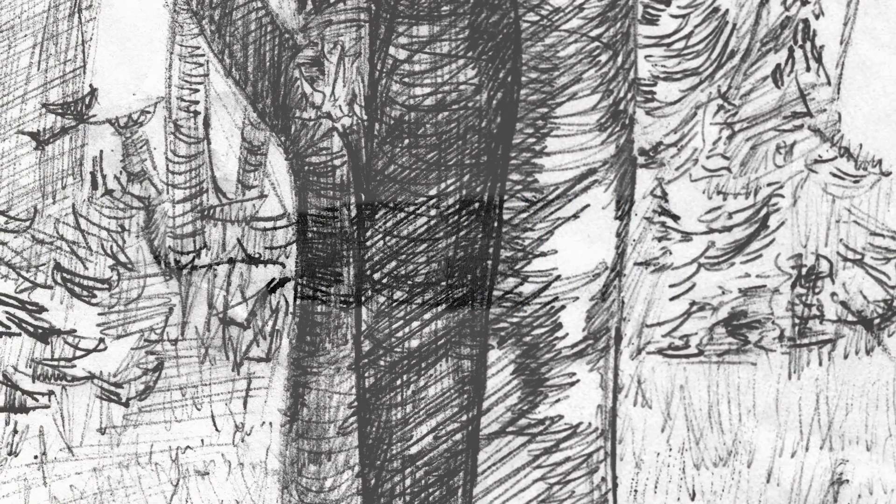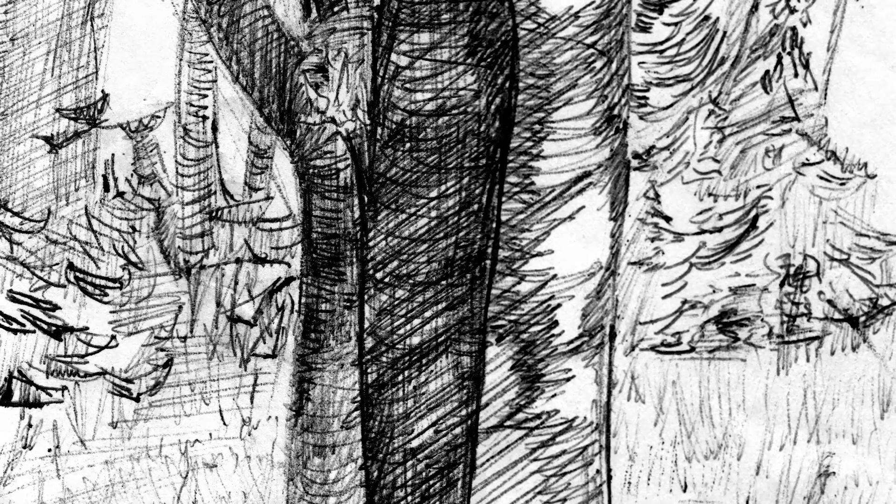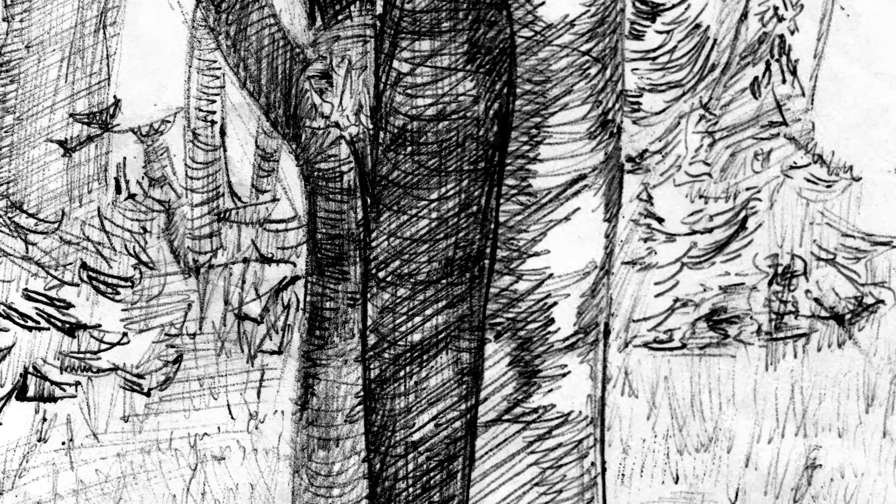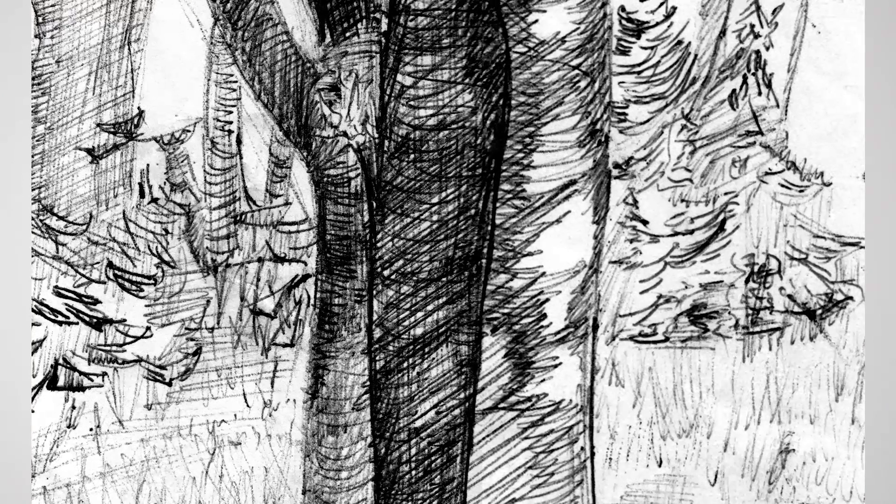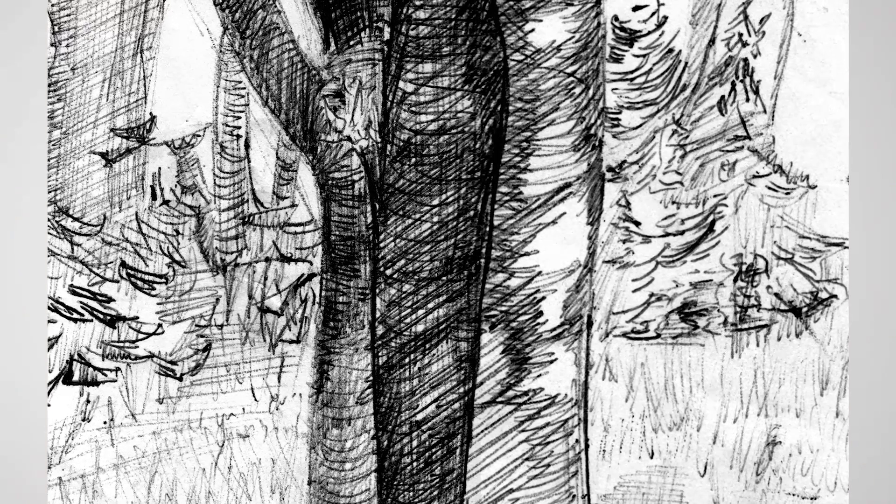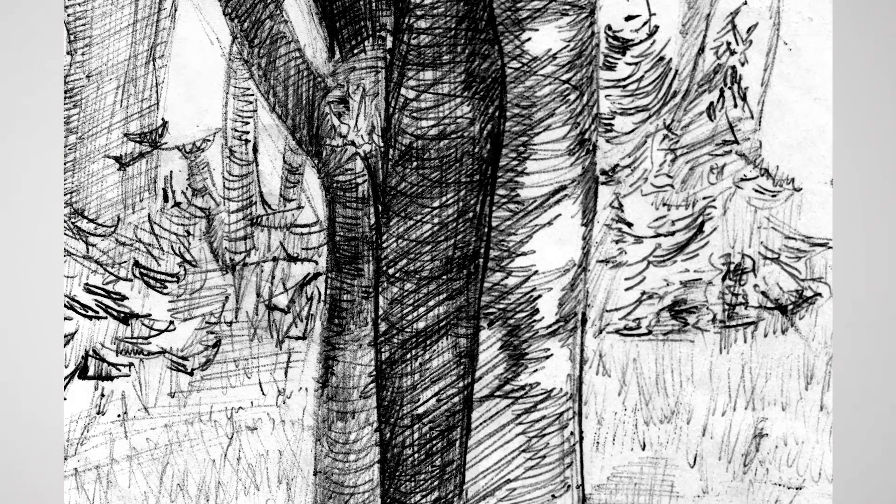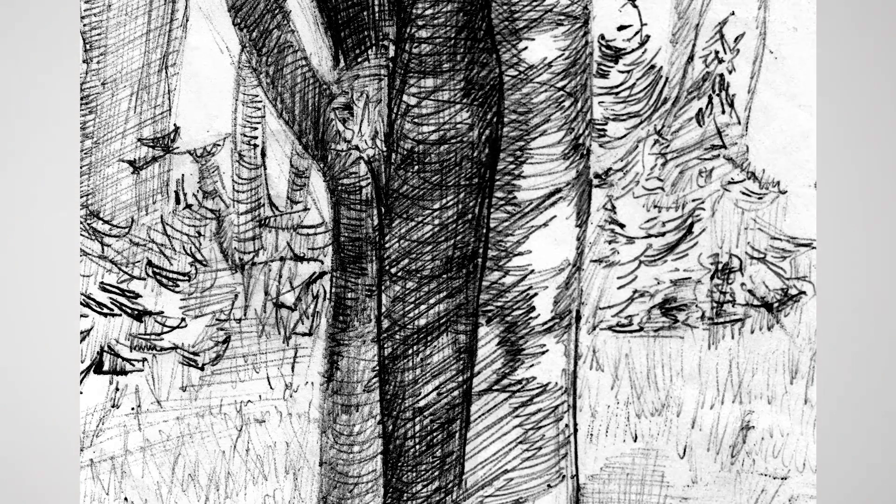Wherever possible, let your hatching follow the form of the object you're drawing. This is often called contour hatching. Not only will that prevent your drawing from sending conflicting signals, it will also help you to feel your way around its surface.